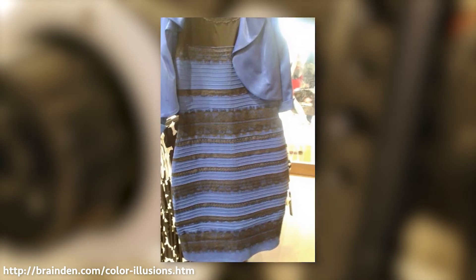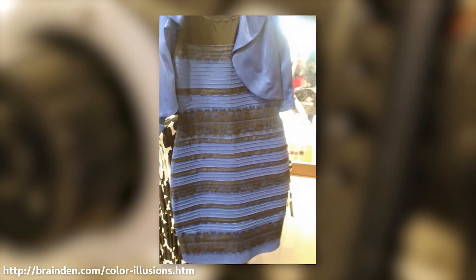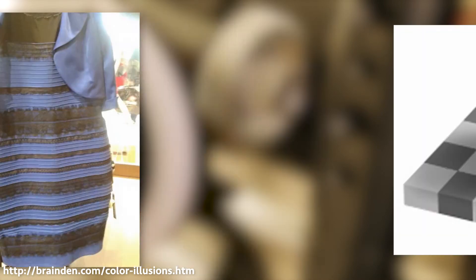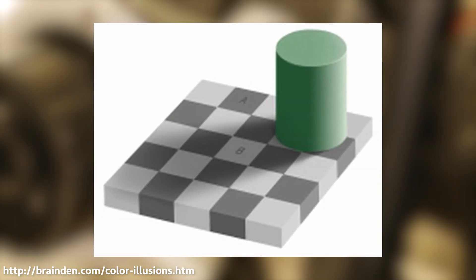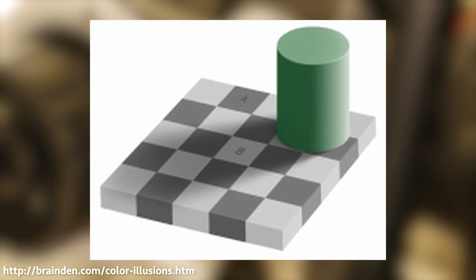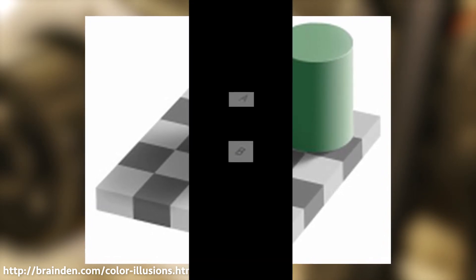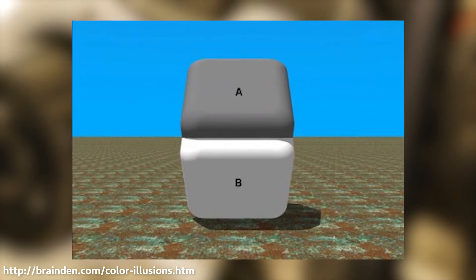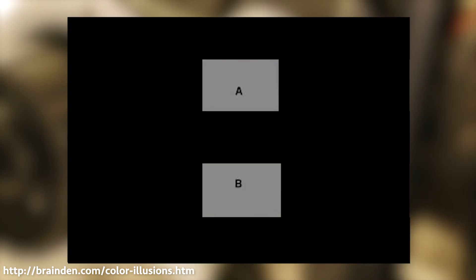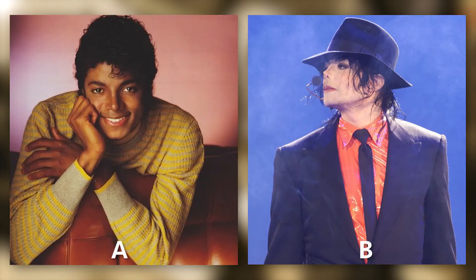For example, look at this dress — do you see gold and white, or gold and blue? Now look at the squares marked A and B in this photo. Totally different shades of gray, right? Nope. And believe it or not, this is the exact same person in A and B. Don't trust your eyes! This is why we rely on scopes and meters when doing any color work.